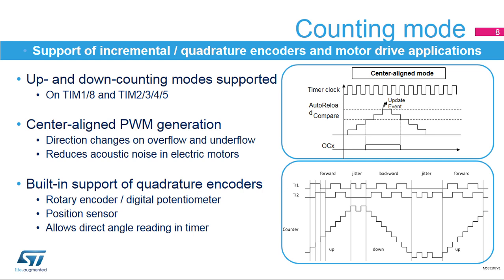In center-aligned mode, the counting direction changes automatically on counter overflow and underflow. For a given PWM switching frequency, this mode reduces the acoustic noise by doubling the effective current ripple frequency, thus providing the optimum tradeoff between the power stage's switching losses and noise.